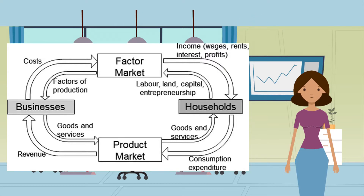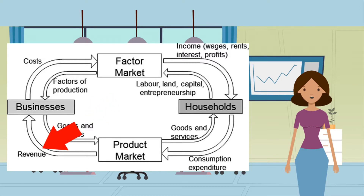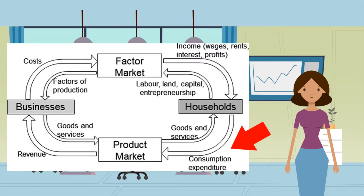From a firm's point of view these are the costs of doing business. But in the product market, firms sell goods and services to households; in return they get revenue. From a household's point of view this is their consumption expenditure. This diagram is simplified because it doesn't include the impact of governments and banks on the economy.